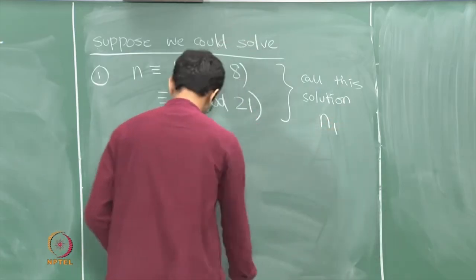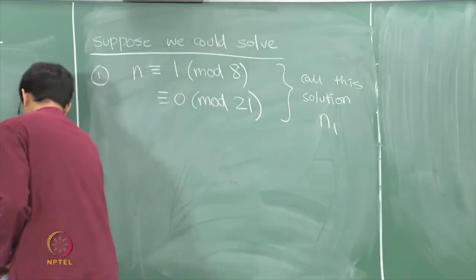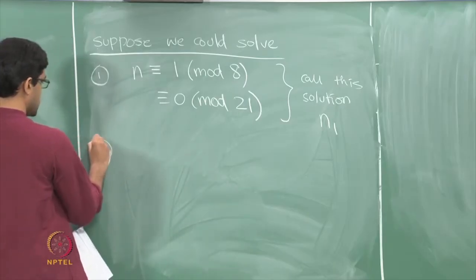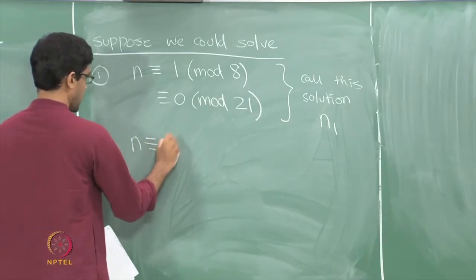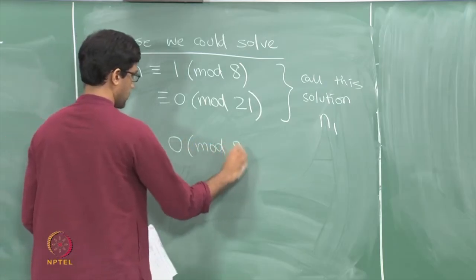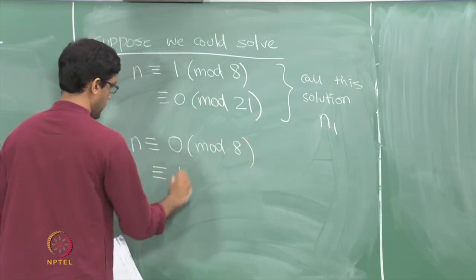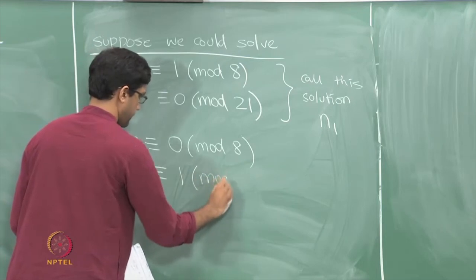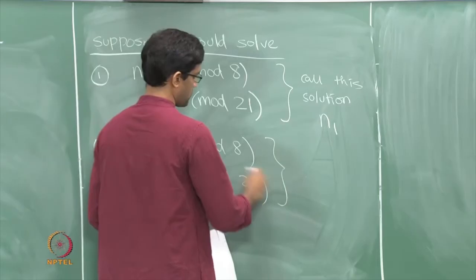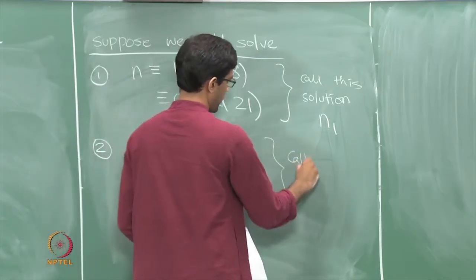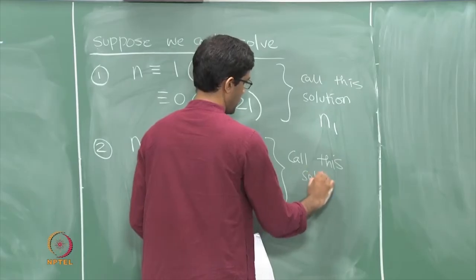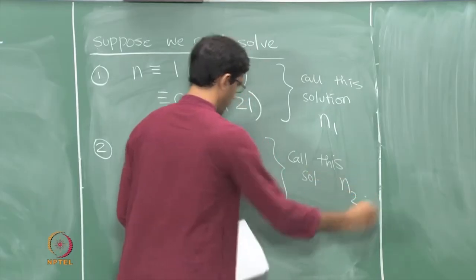Similarly, let us say we can solve a second problem as well: find n congruent to 0 mod 8 and 1 mod 21. Assuming I can solve this, let me call this solution n2.